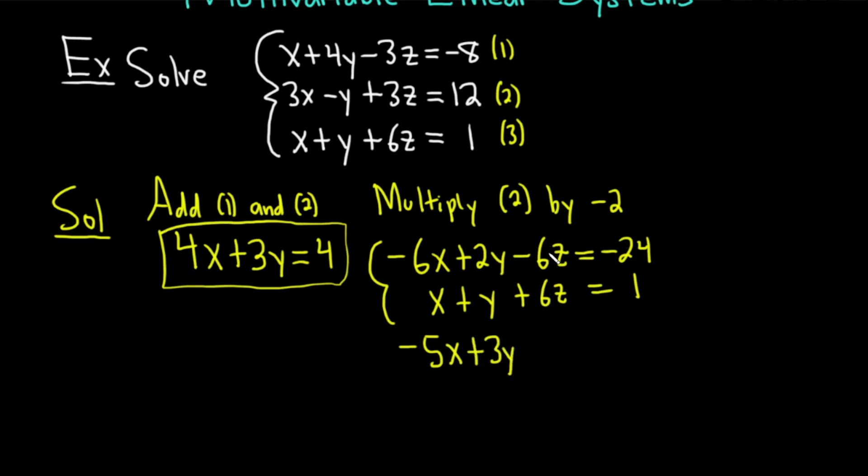And these cancel. That's the whole point. Negative 6z plus 6z is 0 so those are gone. And this is equal to negative 24 plus 1, so that's negative 23. I'm going to put this in a box.